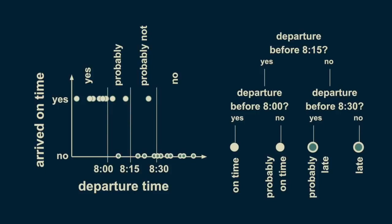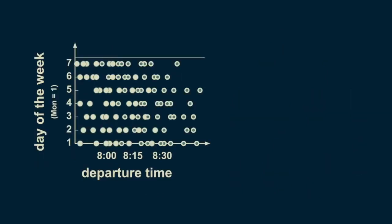We can extend this example to the case where there are two predictor variables. Consider both the departure time and the day of the week. We'll start counting at Monday equals 1, so Saturday equals 6 and Sunday equals 7. Inspecting the data, we can see that on Saturday and Sunday — the green filled donuts representing being late — extend further to the left. This means that leaving at 8:10 is probably sufficient to get you to work on time on a weekday, but probably not on the weekend.